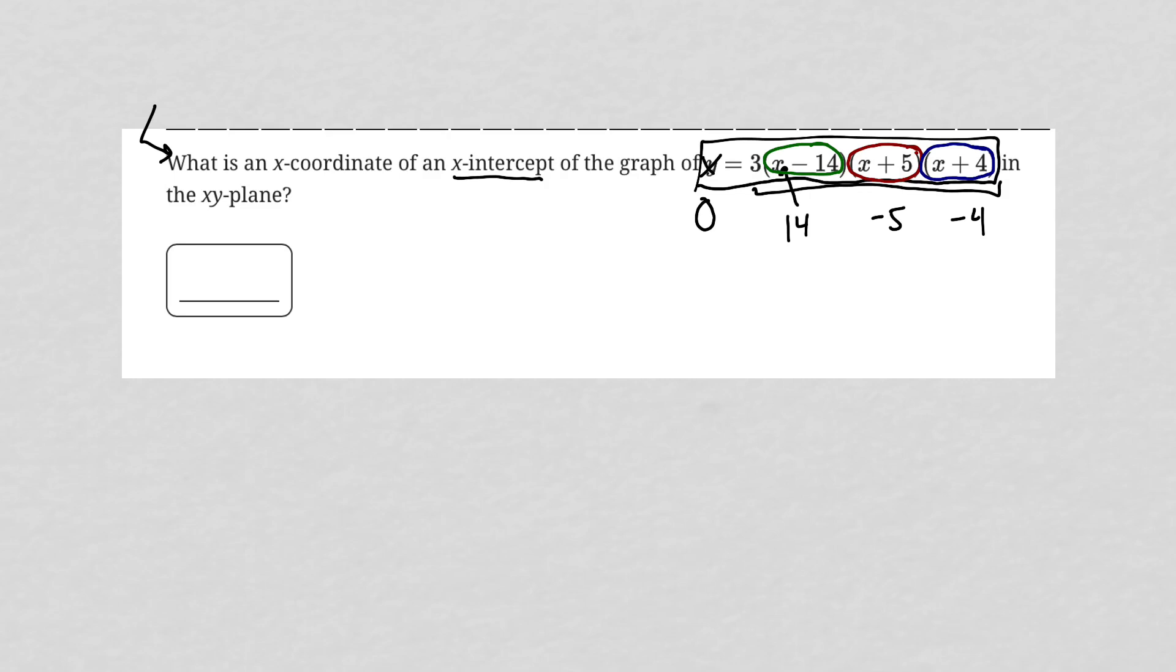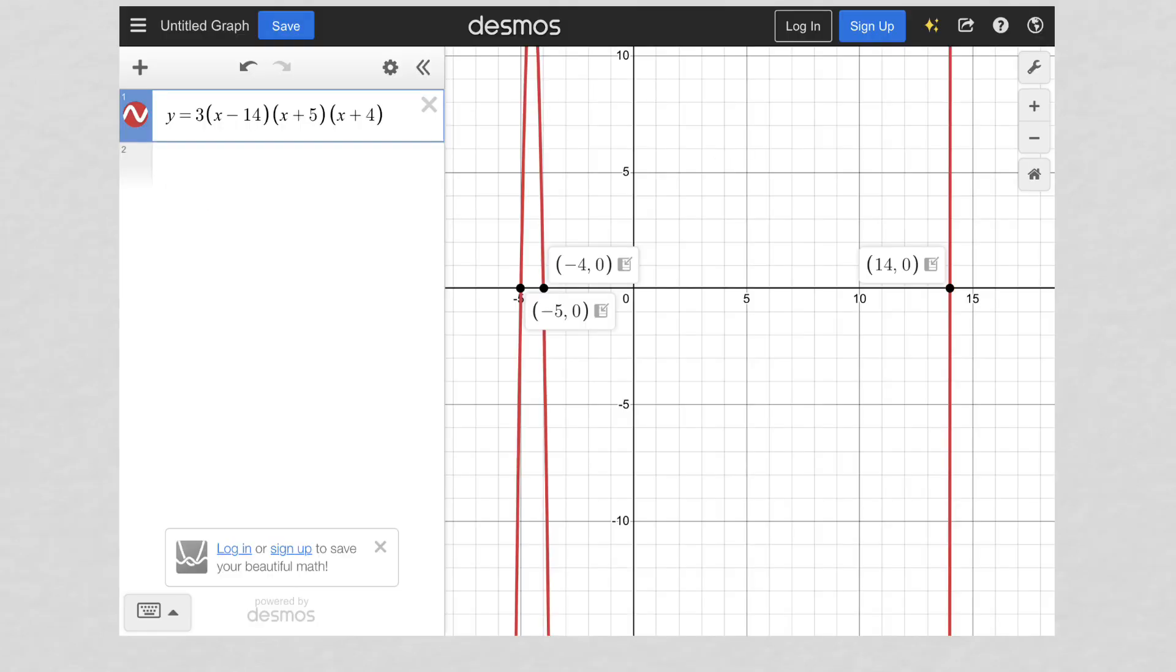If you prefer to use Desmos, I have it here on my next slide. You could just plug in the equation itself, as you can see here. And then we're looking for x-intercepts directly and visually. And we can see those here as well. We can see the negative 4 x-intercept, the negative 5 x-intercept, and the positive 14 x-intercept there as well. So not necessary, but you can use that if you'd like.